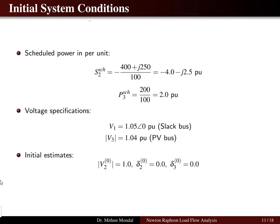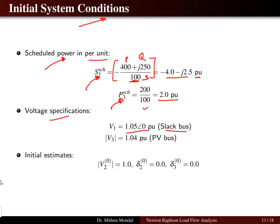The computation starts from the initial system conditions. The scheduled power in per unit for bus 2 is −400 + j250 MVA divided by the 100 MVA base, giving −4 − j2.5 per unit. The scheduled power for bus 3 is 2 per unit. The slack bus voltage is 1.05∠0°. The PV bus voltage magnitude V3 is 1.04 per unit. The initial estimates for bus 2 voltage and phase angle are 1 and 0, and bus 3 angle is 0.